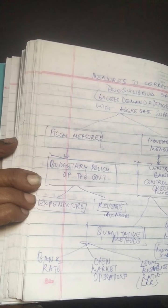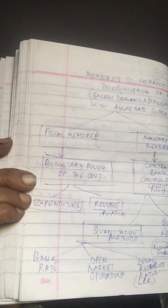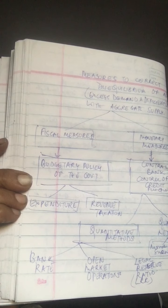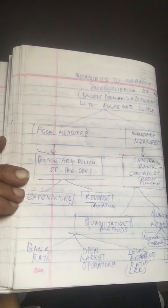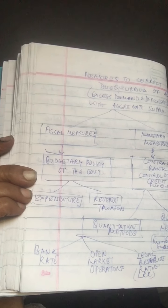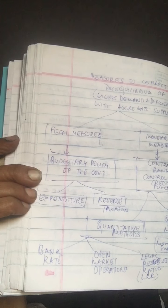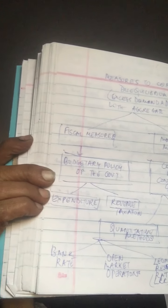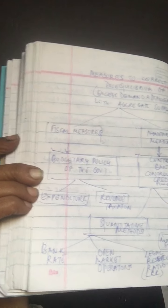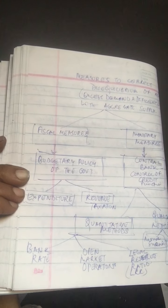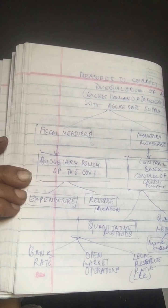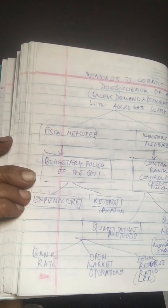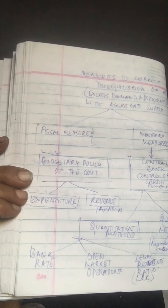The measures undertaken by the central bank are classified into two groups: quantitative methods and qualitative methods. Quantitative methods regulate the volume of credit and money supply in total, across the board — everybody is treated equally with no specified policy for a specific sector. Qualitative methods are selective credit control measures that aim at regulating the direction or the use of credit — who should get more credit, who should not, and what serves welfare or employment generation.